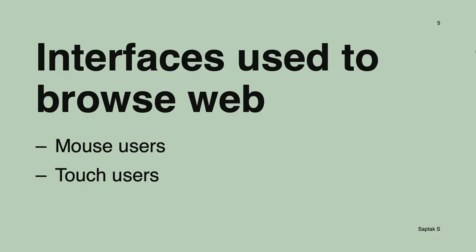We're going to start with interfaces used to browse the web. Most of you are familiar with mouse users or touch users — mouse users use a mouse on laptops or desktops, and touch users on phones. Most websites work really great with mouse and touch users. In fact, a lot of websites are designed thinking only about mouse users and touch users in mind.